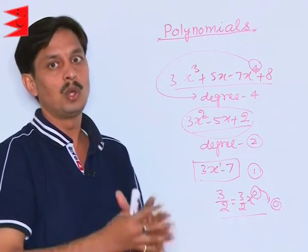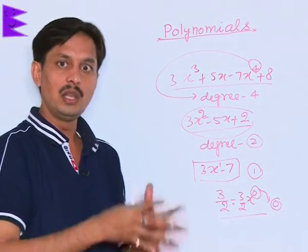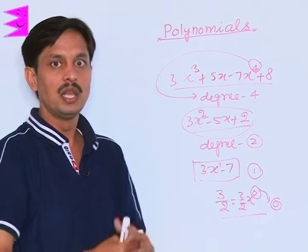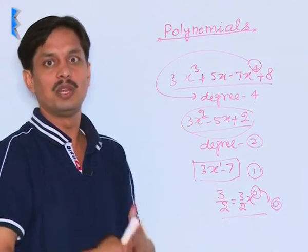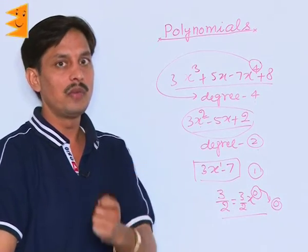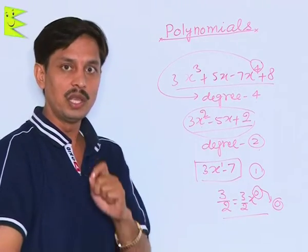So the degree of a constant polynomial is 0. Degree of a linear polynomial is 1. Degree of a quadratic polynomial is 2. Degree of a cubic polynomial is 3. Degree of a biquadratic polynomial is 4 and so on. And the number of zeros is always equal to whatever is the degree of a polynomial.